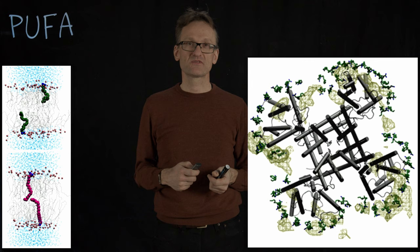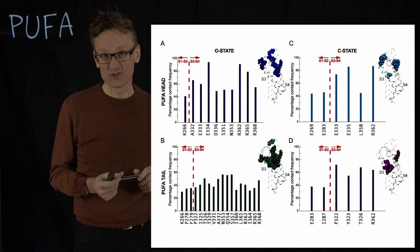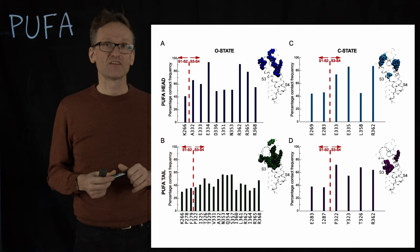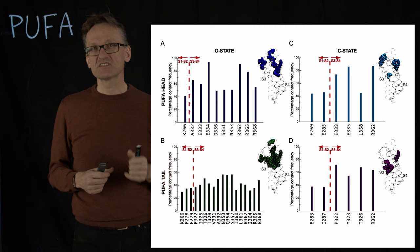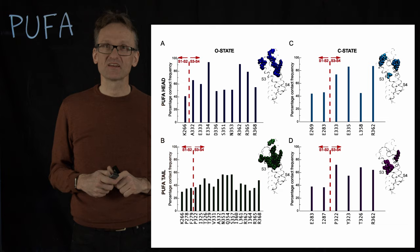Not just that, we can show that they preferentially bind to a handful of residues, and if we now take those residues and mutate them in the lab, those proteins are no longer binding PUFAs. So it appears that we have a handful of residues around this S4 helix that are responsible for the entire binding pattern.